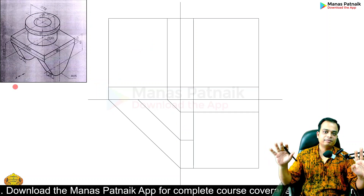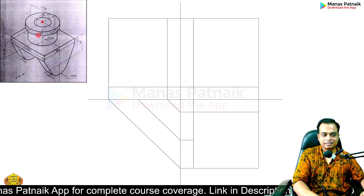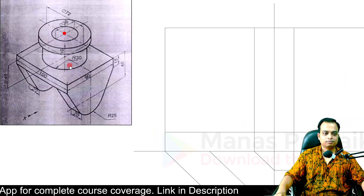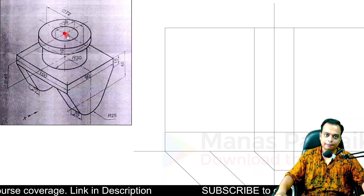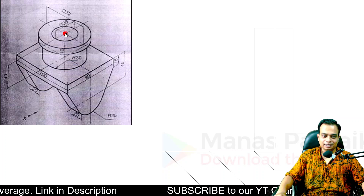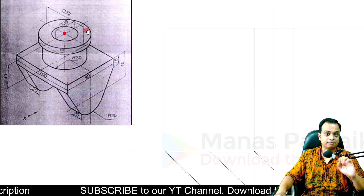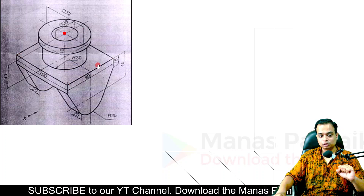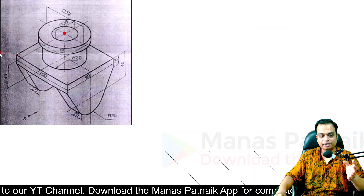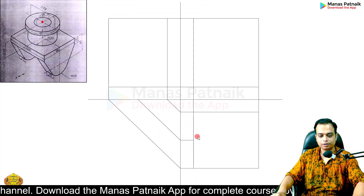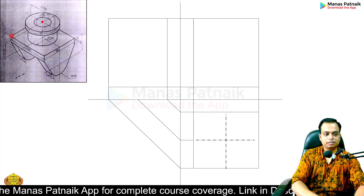Having worked out the dimensions of all the boxes, we find the center location for the top view. This center is for both the concentric circles and the rectangle. Half the dimensions: half of 100 is 50, half of 90 is 45. So the center is at 50 and 45.